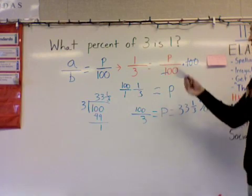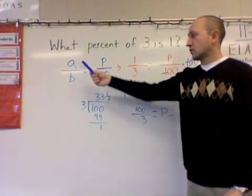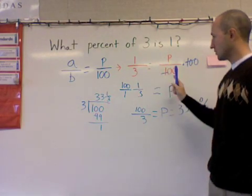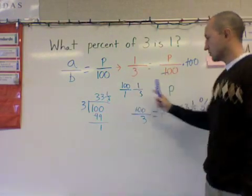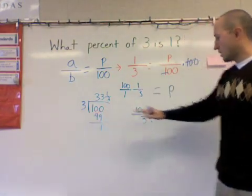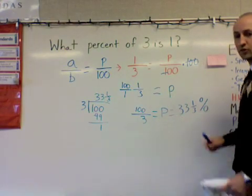So remember, in order to find a percent, we need to set up this formula. Replace the variables with the numbers that are given. We use division. We use multiplication. We're going to times 100 to both sides. I get this fraction that can be simplified using division. My final answer, P, the percent is equal to 33 and 1 third percent.